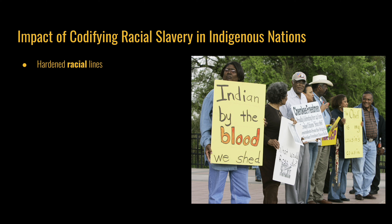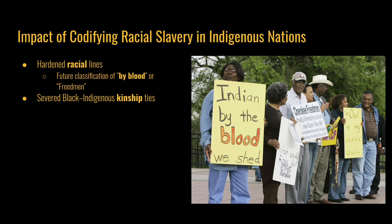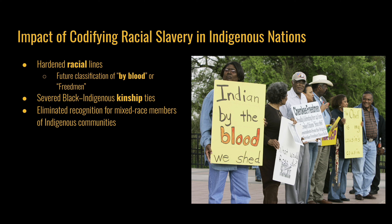The impact of codifying racial slavery in indigenous nations was that it hardened racial lines, the same impact as codifying racial slavery in white society in the United States. Future classifications for tribal members would be described as by-blood or as freedmen. Even though both groups would technically be considered part of these tribes, it severed Black indigenous kinship ties, making it more difficult to be treated like a family member when you had also been classified as a piece of property. It also eliminated recognition for mixed-race members of indigenous communities, as there was quite a bit of interracial marriage and unions prior to these slave codes.